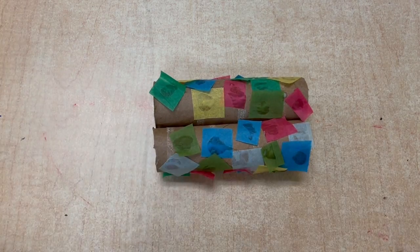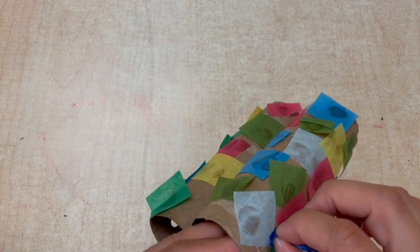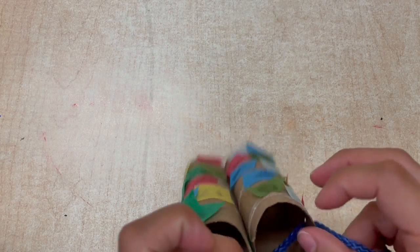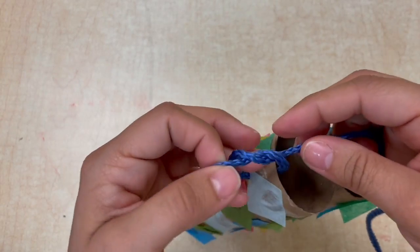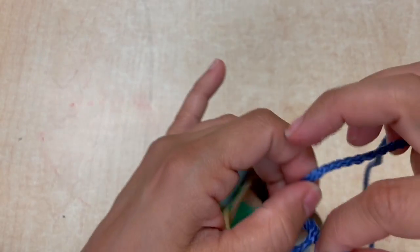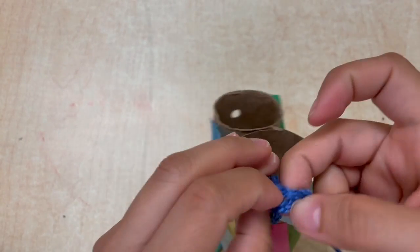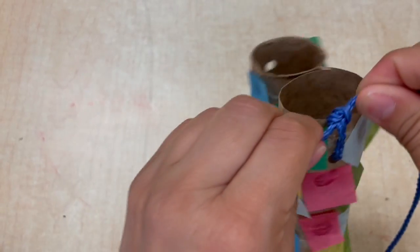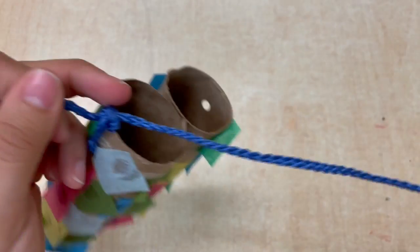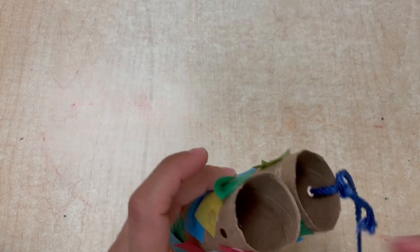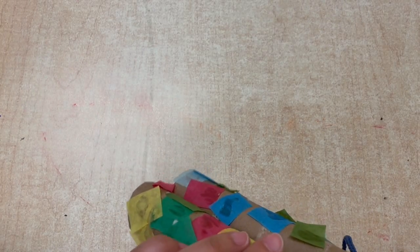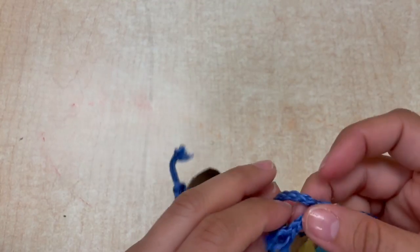When you're all done, you're gonna get your string. You're gonna put one end of the string through one hole and tie a knot through that hole. When you're done with that knot, you're gonna go to the other hole and put the other side of the string through it and tie a knot in that one as well.